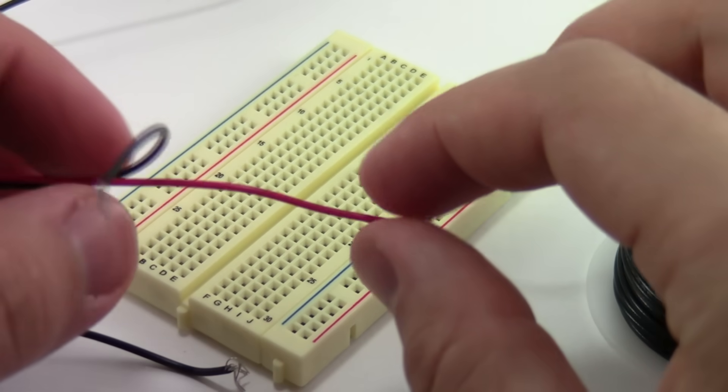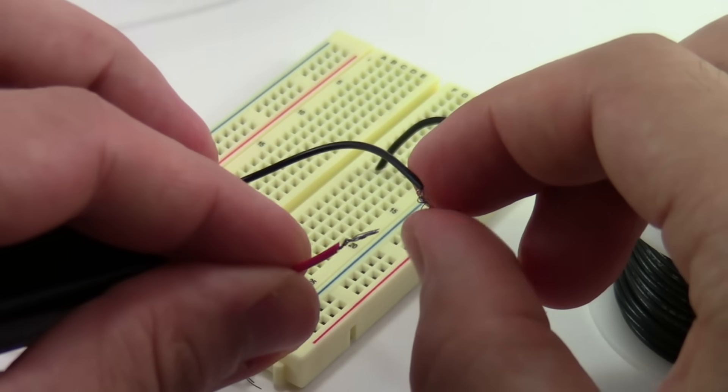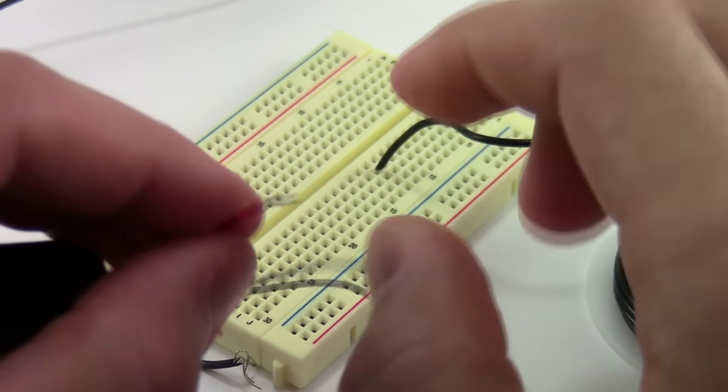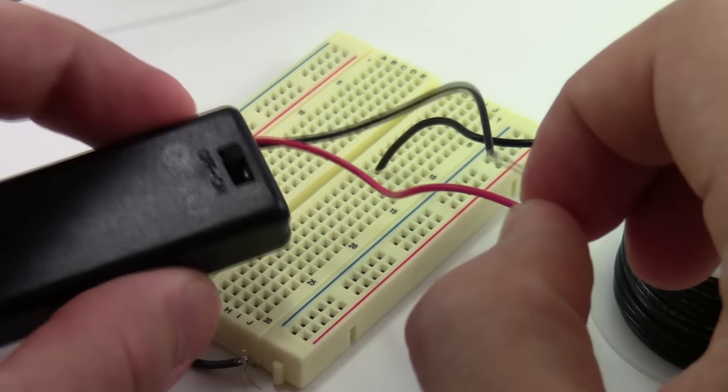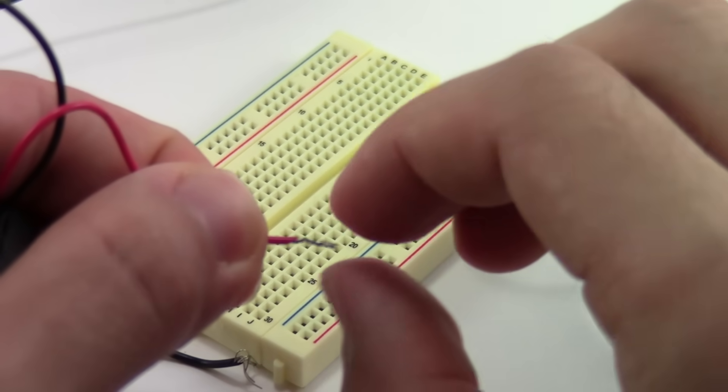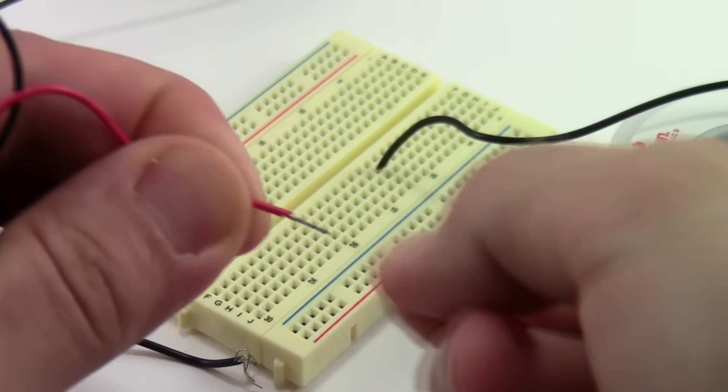If you were watching closely earlier in the video, you might have noticed that I actually violated this rule when I connected the battery pack, which comes with stranded wires. If you're in a pinch, you don't have access to solid core wire or a soldering iron, you can take the end of a stranded wire and twist the strands together as tightly as possible, and that will make it somewhat easier to push into the breadboard, but it's still not the easiest way to go.